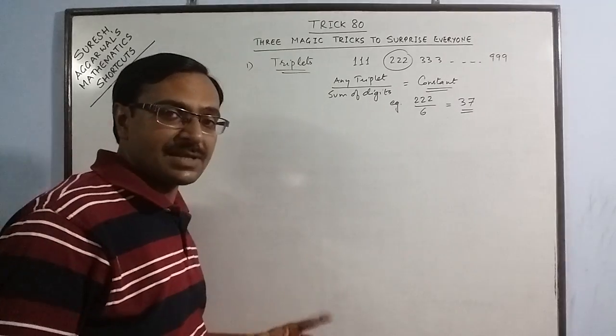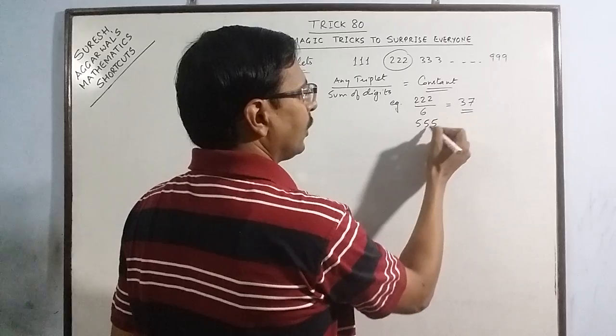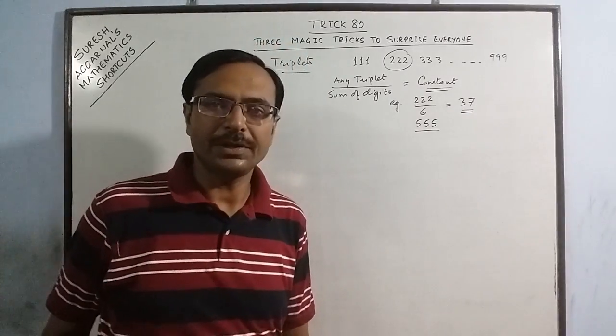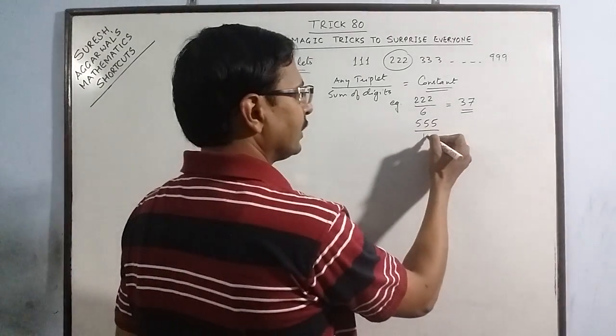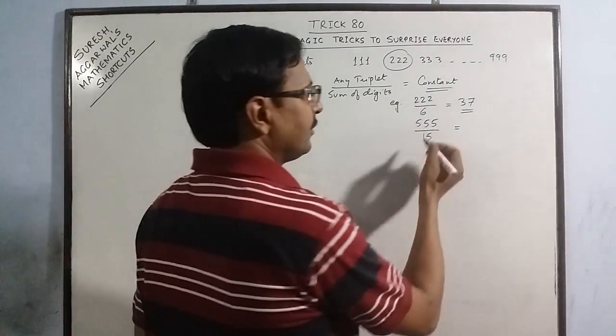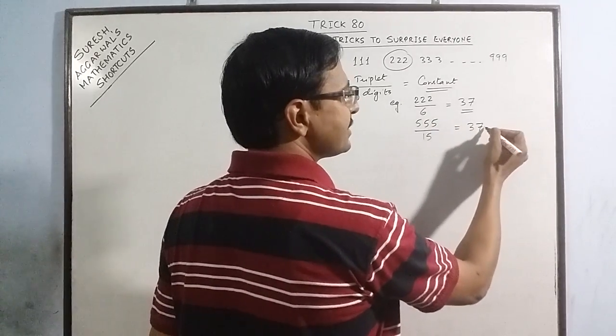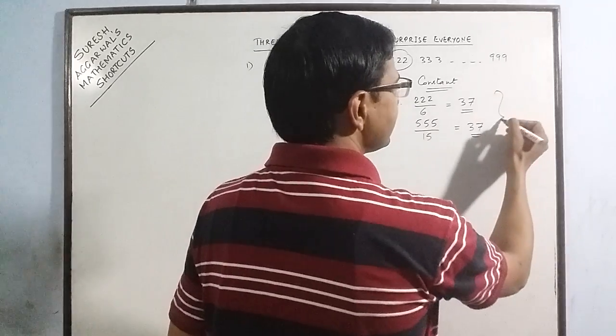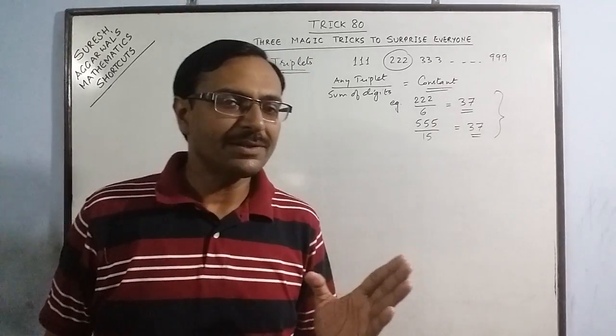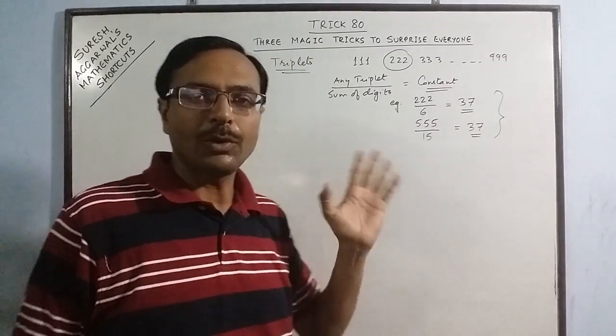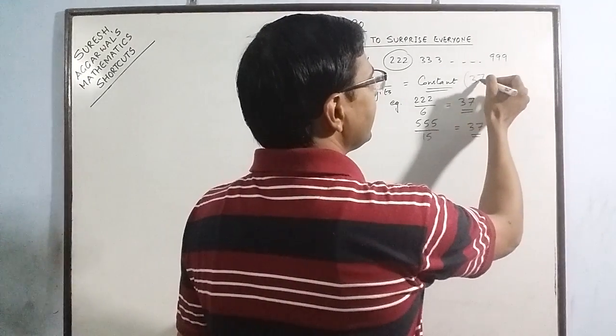Now let us check the same with, say, triple 5. Now triple 5, this triplet, the sum of digits 5 plus 5 plus 5 is 15. Now divide triple 5 by 15. 15 times 3 is 45, so 10 remaining, 105. 15 times 7 is 105. The result is same in both cases. Likewise, you can test this method out for any triplet. You will get the same answer. This constant is 37.